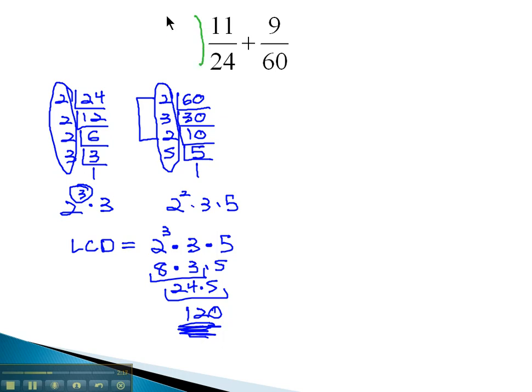So we want to build up each fraction to 120. What do we have to multiply 24 by to get 120? We multiply it by 5 in the numerator and denominator. This gives us 55 over 120 plus... What do we have to multiply 60 by to get the denominator we want of 120? We multiply by 2 in both the numerator and denominator. 2 times 9 is 18 over 120.